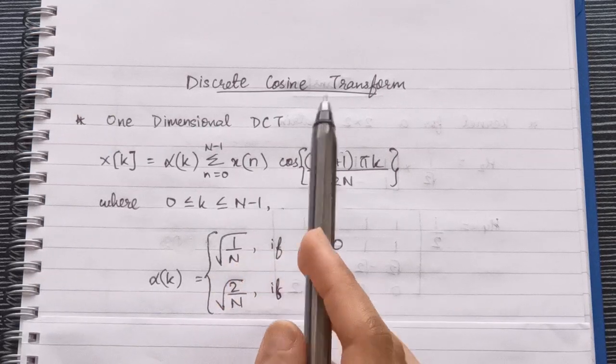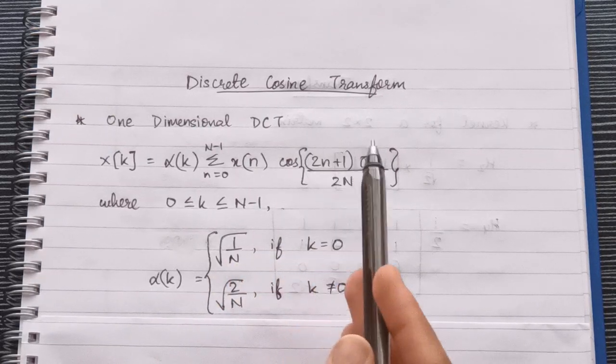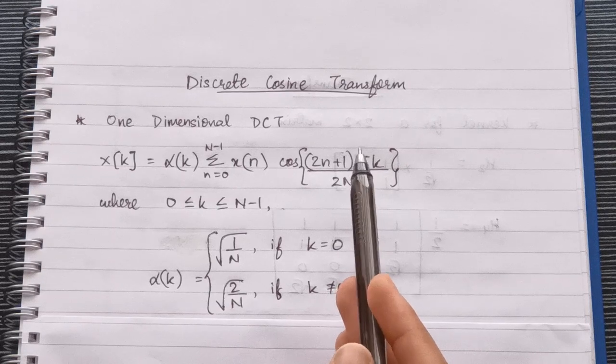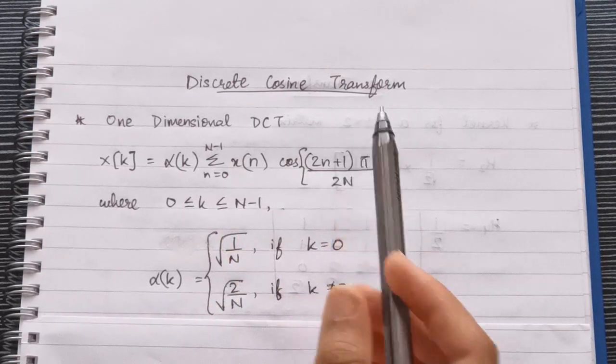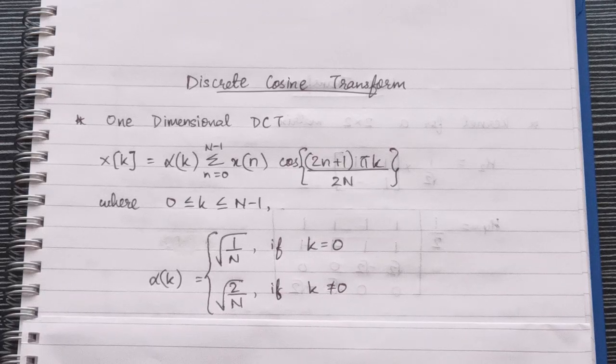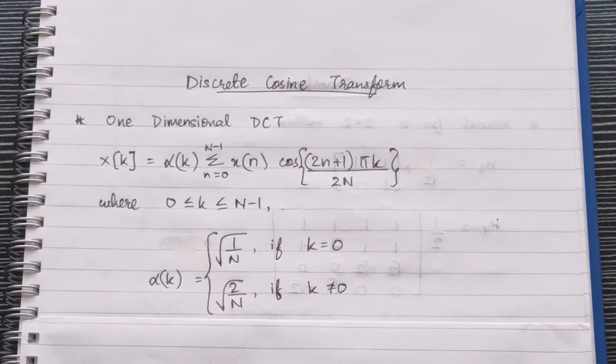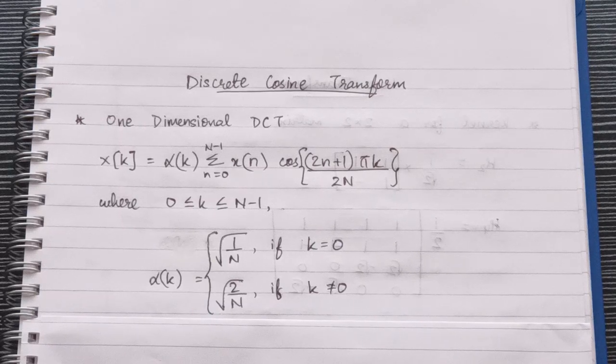DCT represents an image as a sum of sinusoids of varying magnitudes and frequencies. For a typical image, most of the visually significant information is concentrated just in a few coefficients of the DCT.